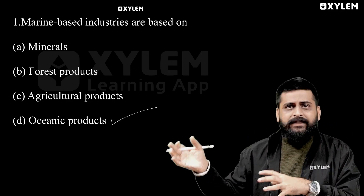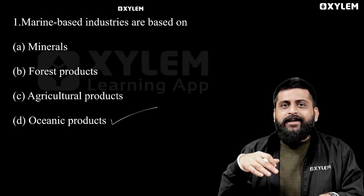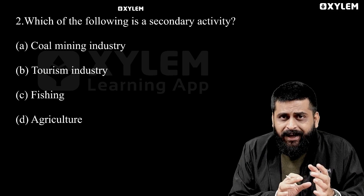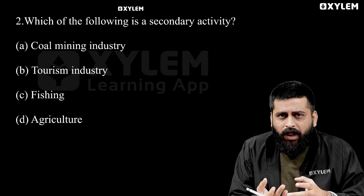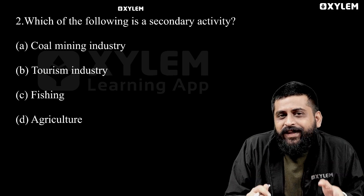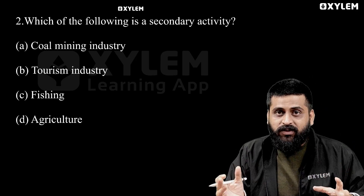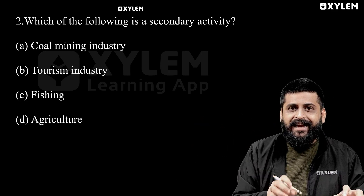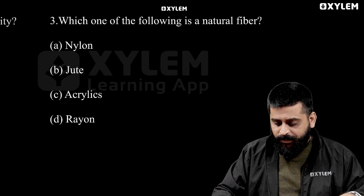In marine-based industries, oceanic products are not included. Next question: which of the following is a secondary activity? Options are: coal mining industry, tourism industry, fishing, agriculture. Coal mining, fishing, and agriculture are primary activities. Option B is the right answer — the secondary activity.